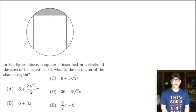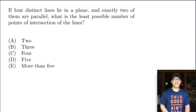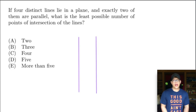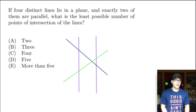Let's go to the last problem. If four distinct lines lie in a plane and exactly two of them are parallel, what is the least possible number of points of intersection? Let's draw some lines. We have a pair of parallel lines, and now we add two other lines drawn randomly. Counting the intersection points: one, two, three, four, five. So we have five points of intersection, meaning the answer cannot be E — it's at least five.